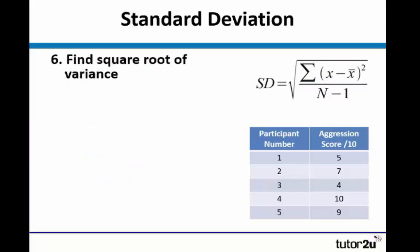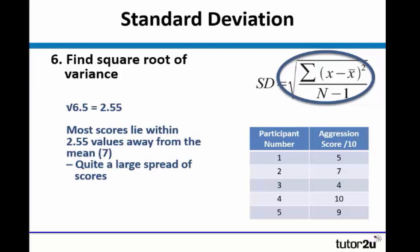We then need to find the square root of the variance, which is the overall part of the sum. So the square root of 6.5 is 2.55. This indicates that most scores lie within 2.55 values away from the mean of 7, which means we have quite a large spread of scores.